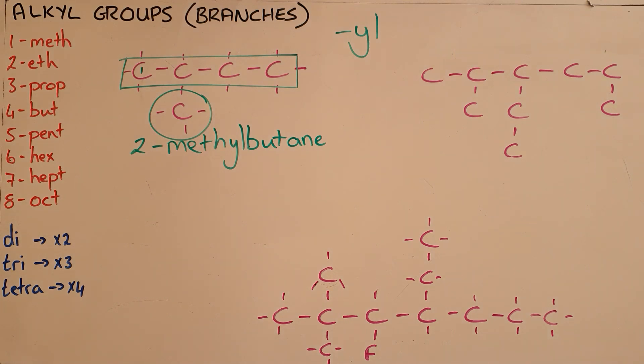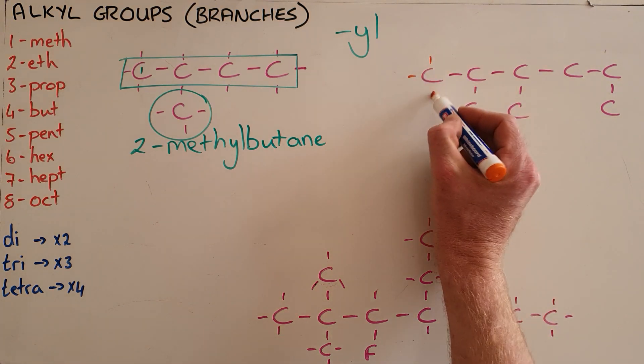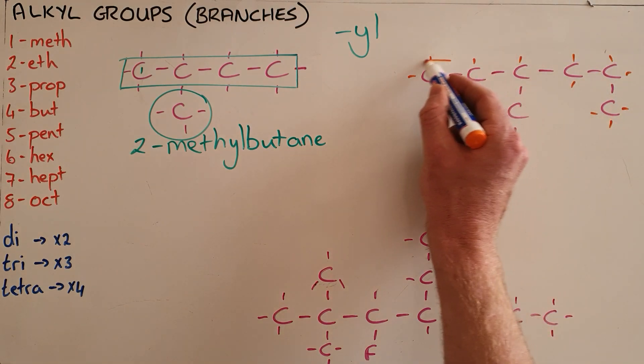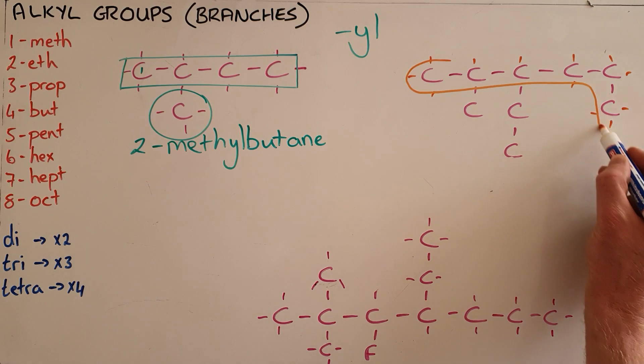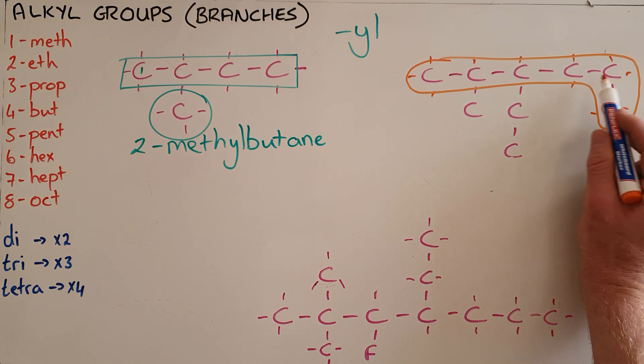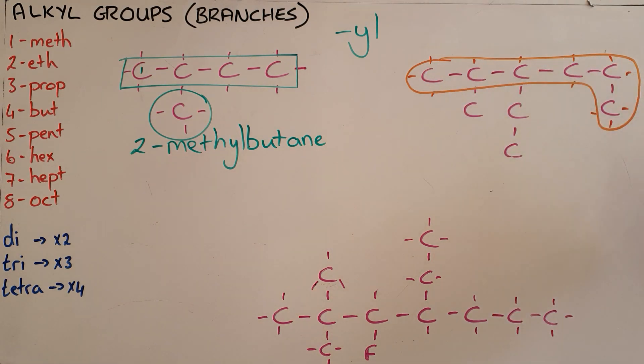The same principle can be applied to longer molecules and multiple chains where our first step once again is going to be to identify the longest carbon chain where here we can see that our longest carbon chain is made up of six carbons. Note here that this branch at the end is not a branch because it is on the first or on the last carbon and as a result forms a continuous chain that is six carbons long.